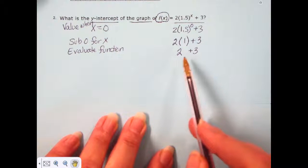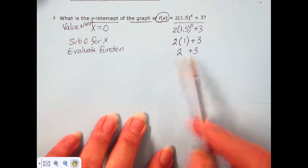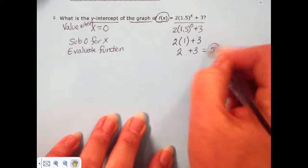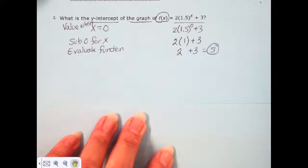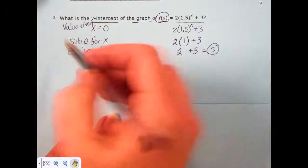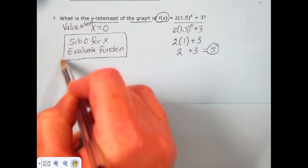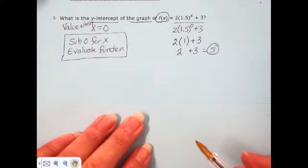And the last step is to evaluate the addition, and 2 plus 3 is 5. The y-intercept of this graph is 5, and that's just how you find the y-intercept. So remember, when you're looking for the y-intercept, substitute 0 for x and evaluate the function.